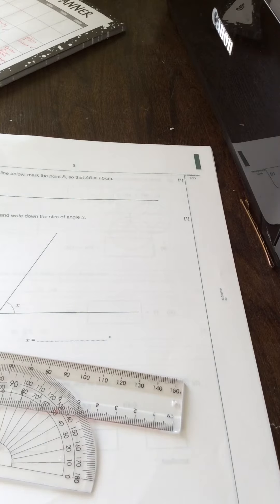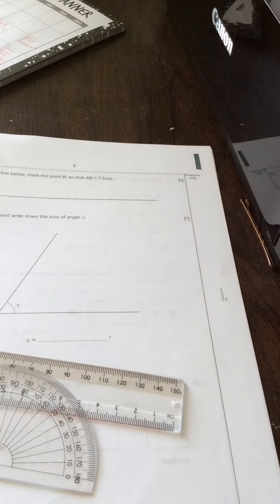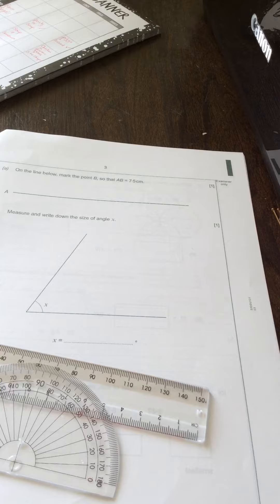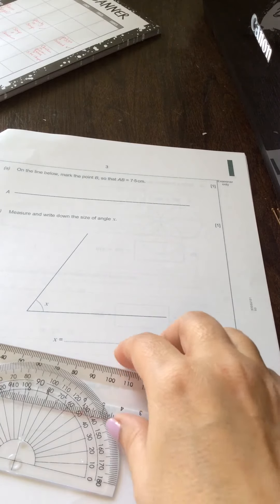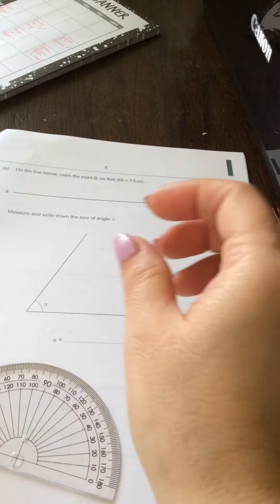This is the answer to question one on the Monday, 11th November 2019 paper for Maths Unit 1 Foundation Tier. It says on the line below, mark point B so that AB is 7.5. So you're going to get your ruler.